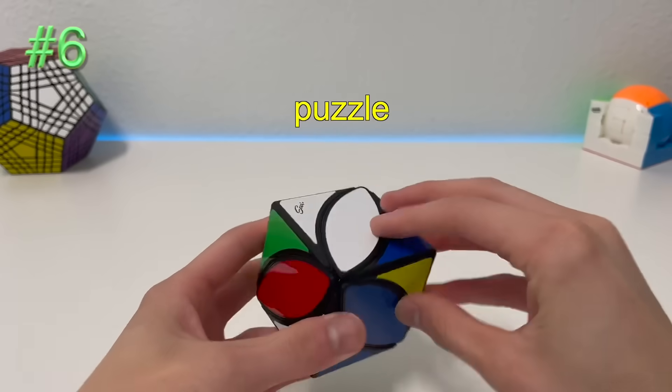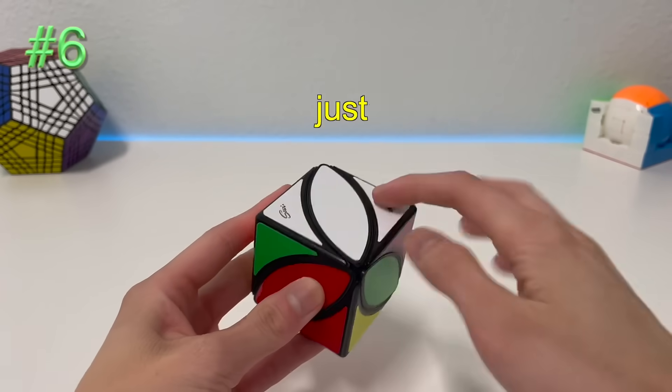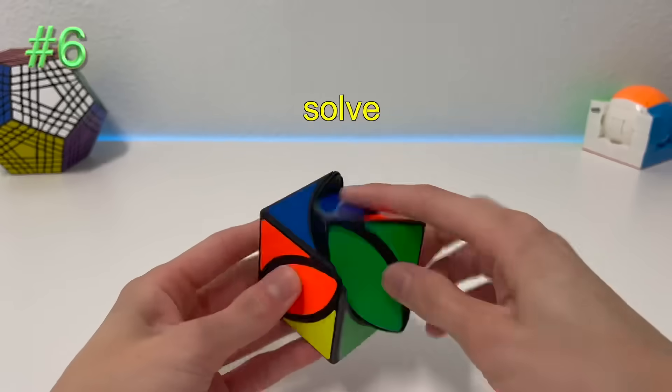Number six, the ivy cube. You can do this puzzle with algorithms or not, but basically it's just matching the colors together, and you can solve it with no algorithms.